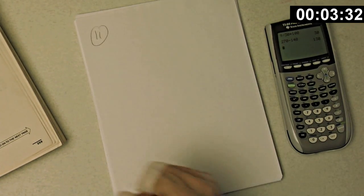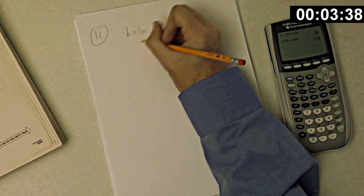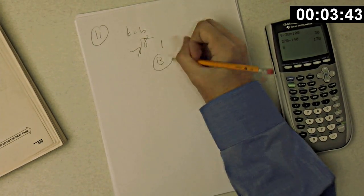Okay. Number 11. When the positive integer k is divided by 7, the remainder is 6. So I'll let k be 6. What is the remainder when k plus 2, that's 8, is divided by 7? The remainder is 1. That's choice B.